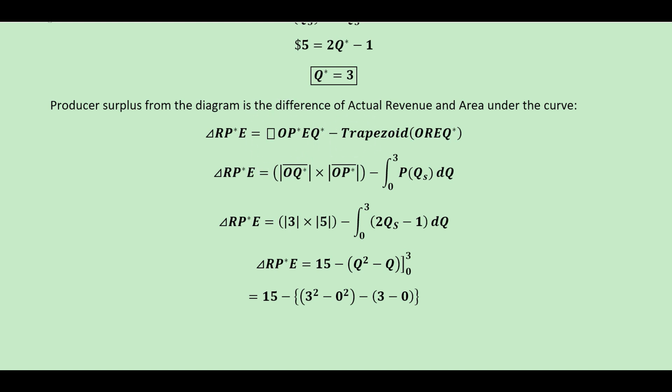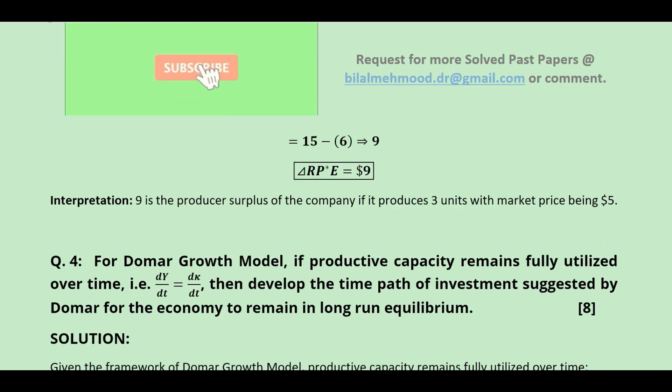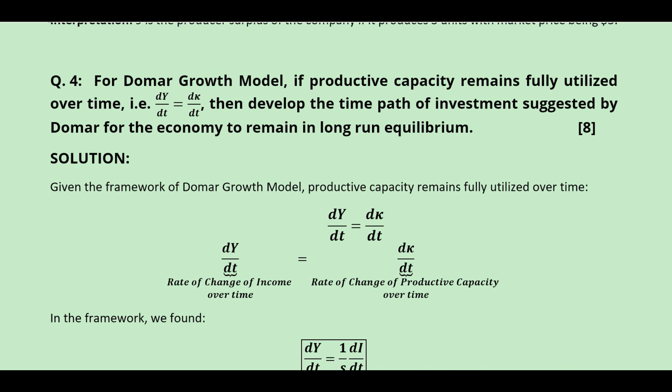The area under the curve is represented by the definite integral of the supply function from 0 to 3, where 3 is the equilibrium output. The rectangle area is the product of equilibrium output and equilibrium price. Substituting both values and the inverse supply function and solving, we get the producer surplus — this occurs at three units of equilibrium output at a price of five dollars per unit.